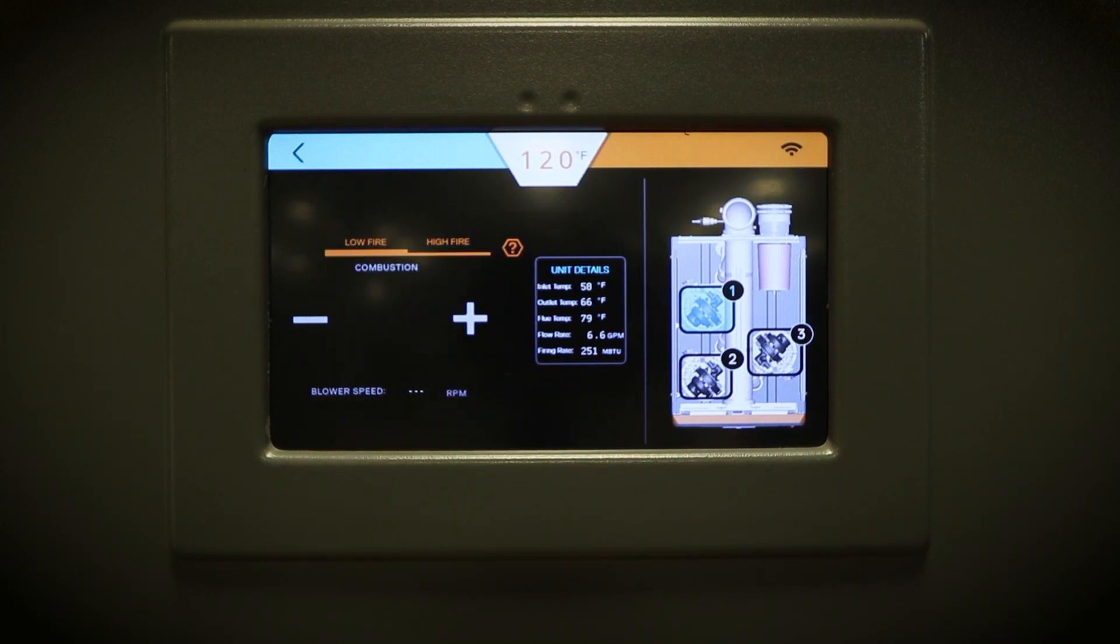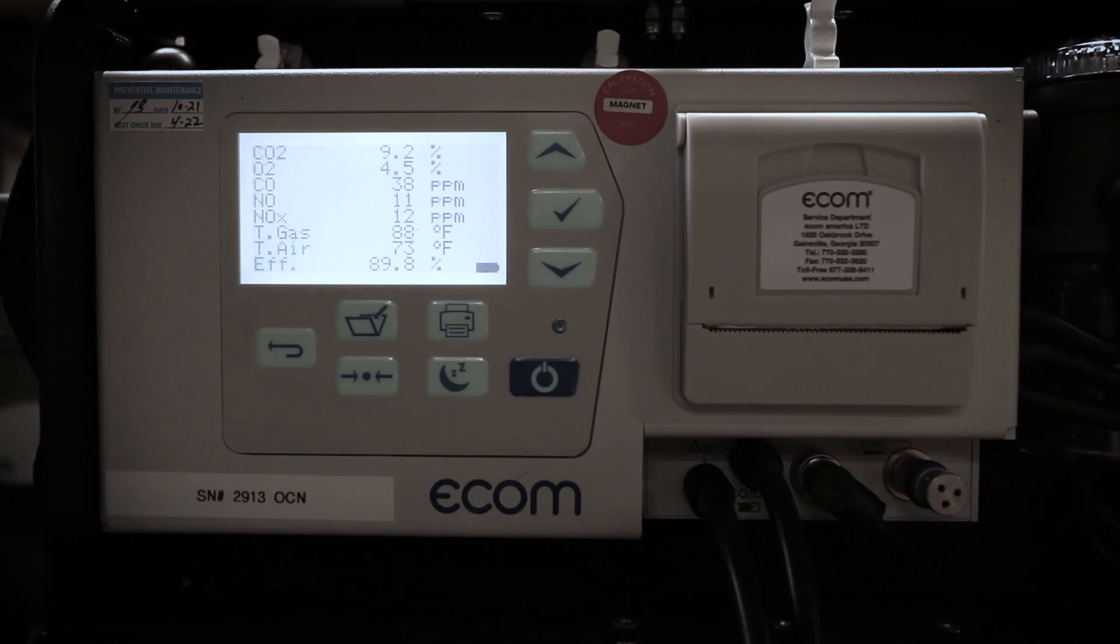Allow the unit to enter low fire. For low fire, the CO2 needs to be between 9.1 and 9.3% on natural gas units. On propane units, the CO2 needs to be between 10.1 and 10.5%. Additionally, make sure the CO level is less than 60 parts per million.